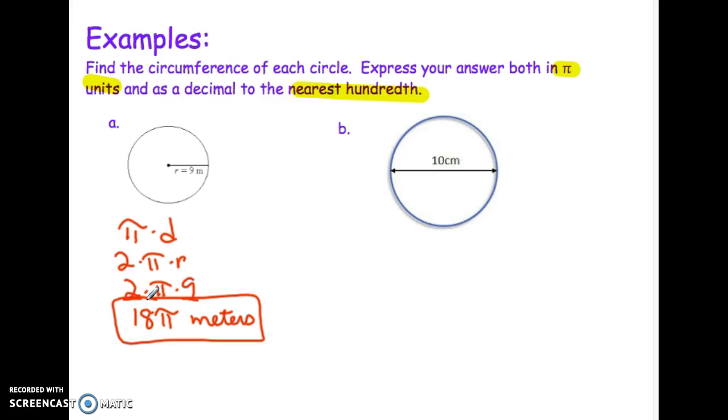When you're asked to write it as a decimal to the nearest hundredth, what you'll do is take π and call it 3.14. You're totally fine using a calculator on this one. You can type in 18 times 3.14, and you'll get about 56.52 meters. Because we rounded π to 3.14, it's really important that you put this approximately sign, which looks like a squiggly equals, instead of just writing an equals sign. Every time we're using π, if we're not leaving it in π units, we're rounding, so I'd like that squiggly equals sign.